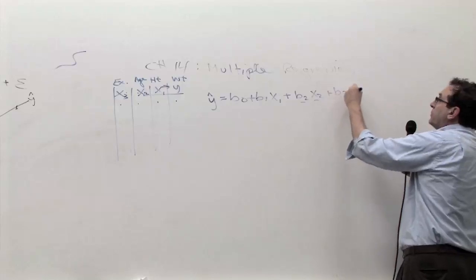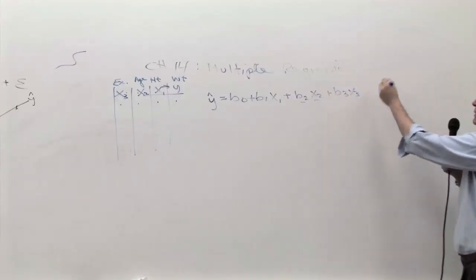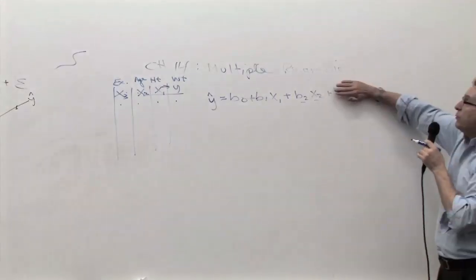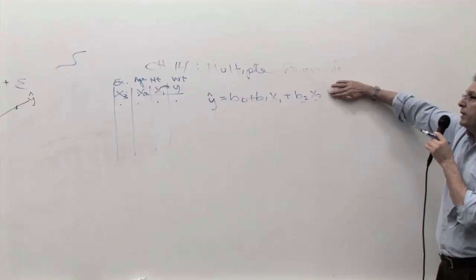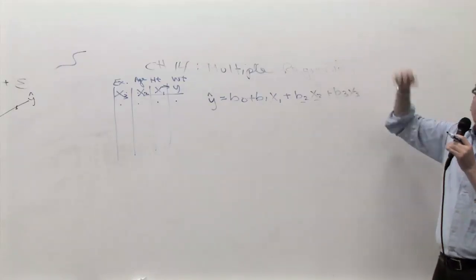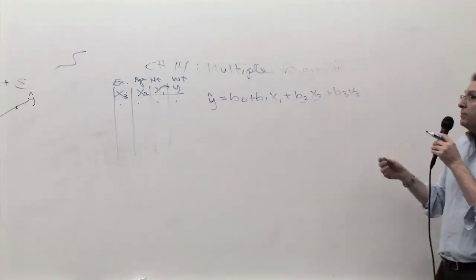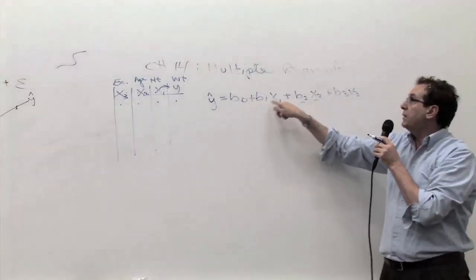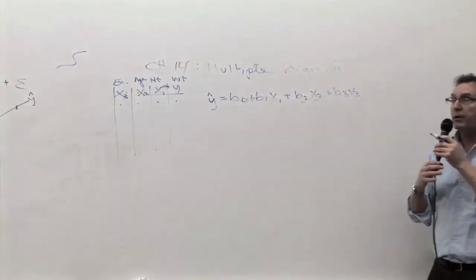And then b3 times x3, if you have three of them, and if you have four of them, it'll be b4 times x4, and like a lot of homeworks, you only have two of them. So it stops right here, b1 x1, b2 x2. So it's very similar to the previous chapter. And in this chapter, you don't have to calculate the b1 and the b0s and the b2s. It's automatically done for you by the computer.